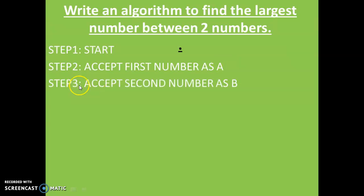Then step three is you have to accept the second number. Because until and unless you get two numbers, you are not find out, you are not checked which one is largest. So before you start to check, you have to accept the second number also. So accept second number as B.